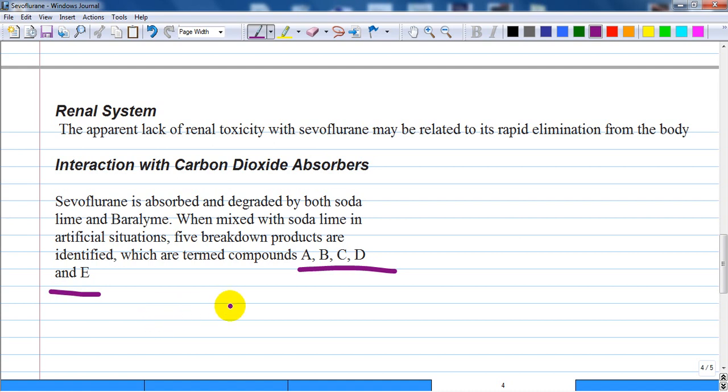The presence of moisture reduces the compound A formation. The concentration of compound A is highest during low flow anesthesia, less than two liters per minute.